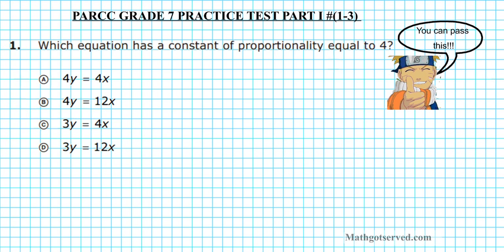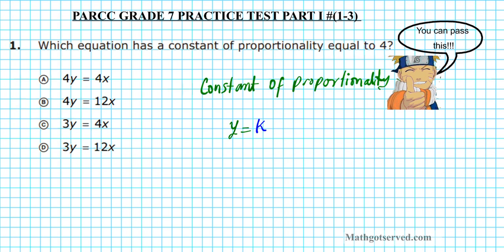When you think about constant of proportionality, there are two formulas you want to associate with this term. When you hear constant of proportionality, you think of y equals kx — that's one form — or you can think about the formula k equals y over x. These are the two formulas you use to calculate the constant of proportionality.